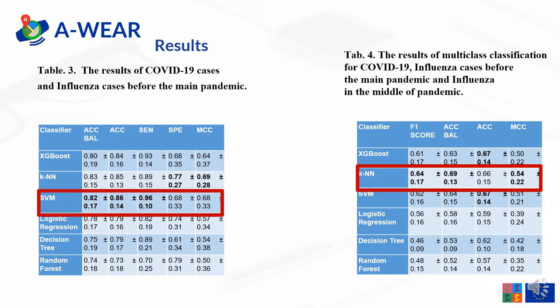The results of classification between COVID-19 cases and influenza cases before the main pandemic are presented in table 3. For this case, the highest balanced accuracy was obtained for SVM. Additionally, the highest number of detected influenza cases before the main pandemic — 96% — was achieved for this classifier. The MCC metric, which takes into consideration the imbalance of the data, was the best for KNN at 69%, and similarly for SVM at 68%.